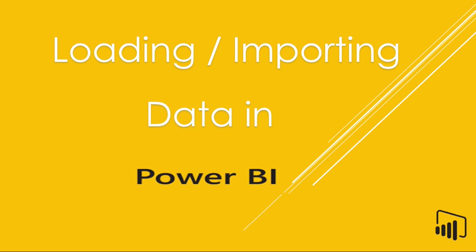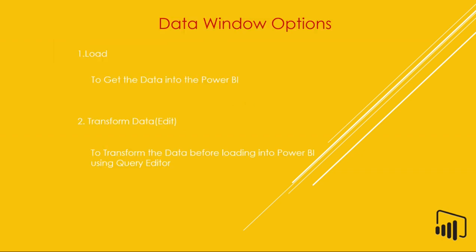After creating the data connections in Power BI, what next? What options are available in the data window? We have two options in the data window: Load and Transform Data. When do we need to choose the Load option, and when do we need to choose the Transform Data option?